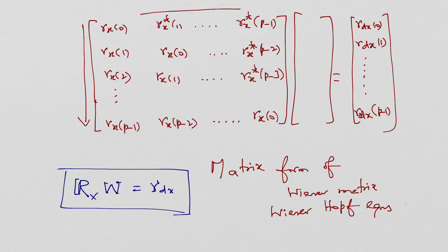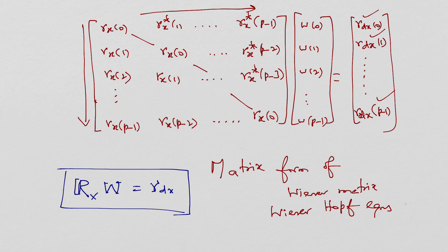In matrix form, R_xx is a p-by-p Hermitian Toeplitz matrix of autocorrelations, with elements r_xx(0), r_xx(1), up to r_xx(p minus 1) along its rows and conjugate-symmetric elements off the diagonal. The vector w contains the filter coefficients w(0), w(1), w(2), up to w(p minus 1) — the vector of Wiener filter weights. The right-hand side r_dx is the vector of cross-correlations from r_dx(0) to r_dx(p minus 1). The full matrix equation R_xx · w = r_dx is the Wiener-Hopf equation.